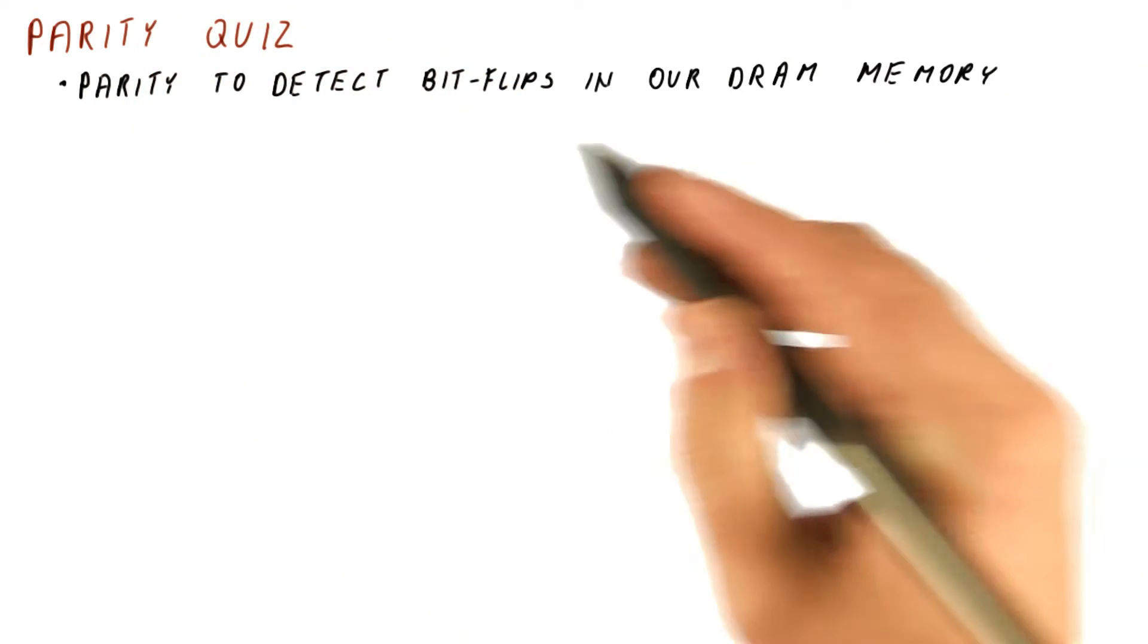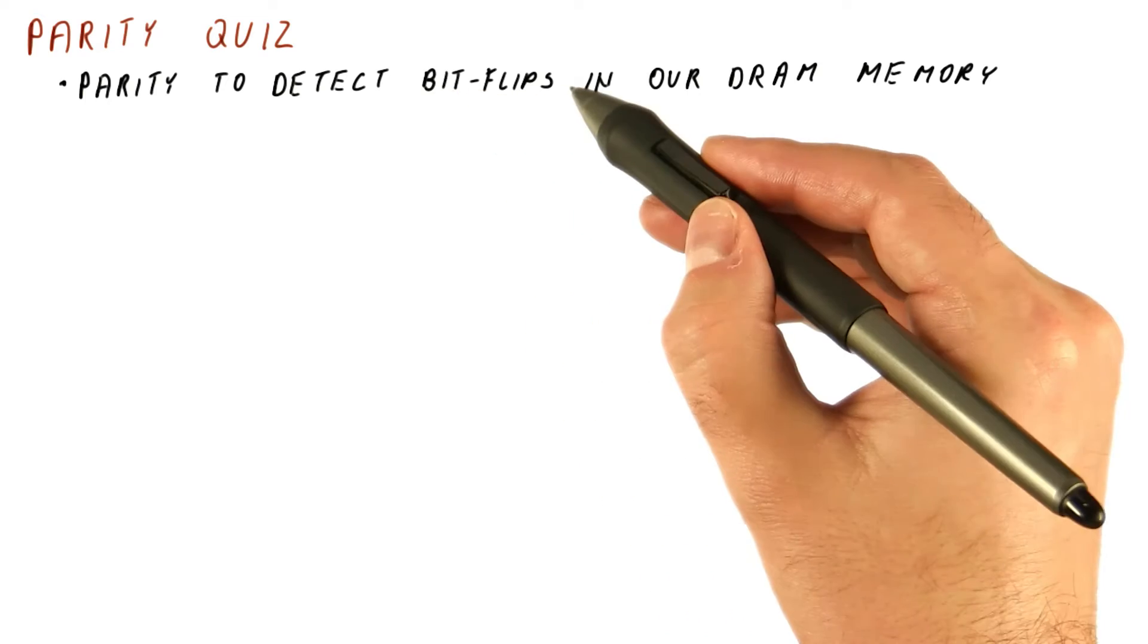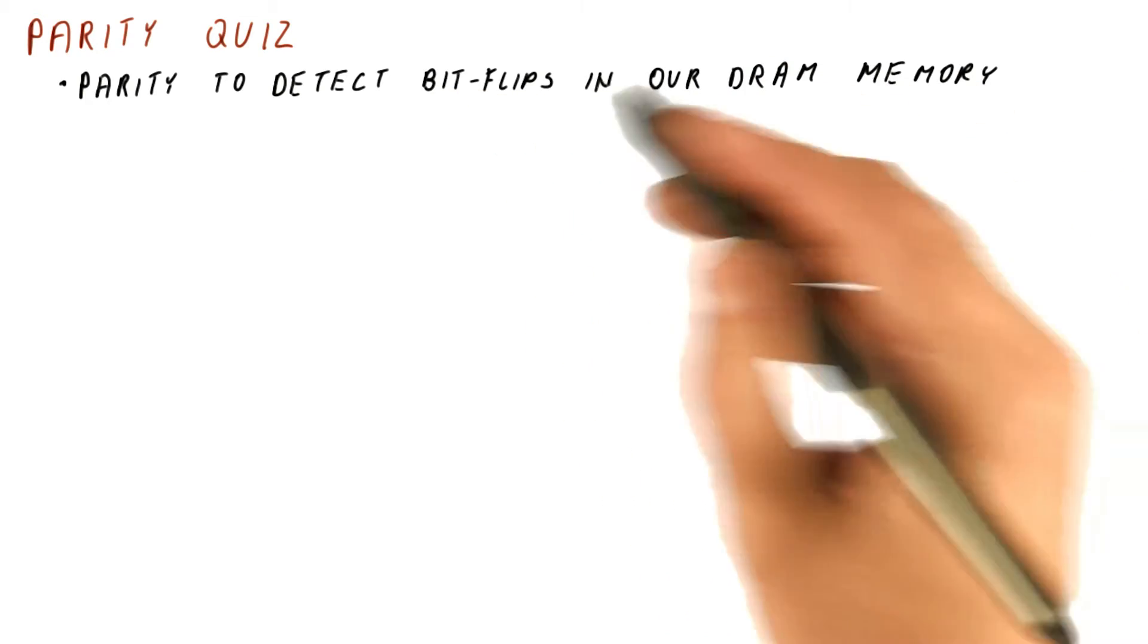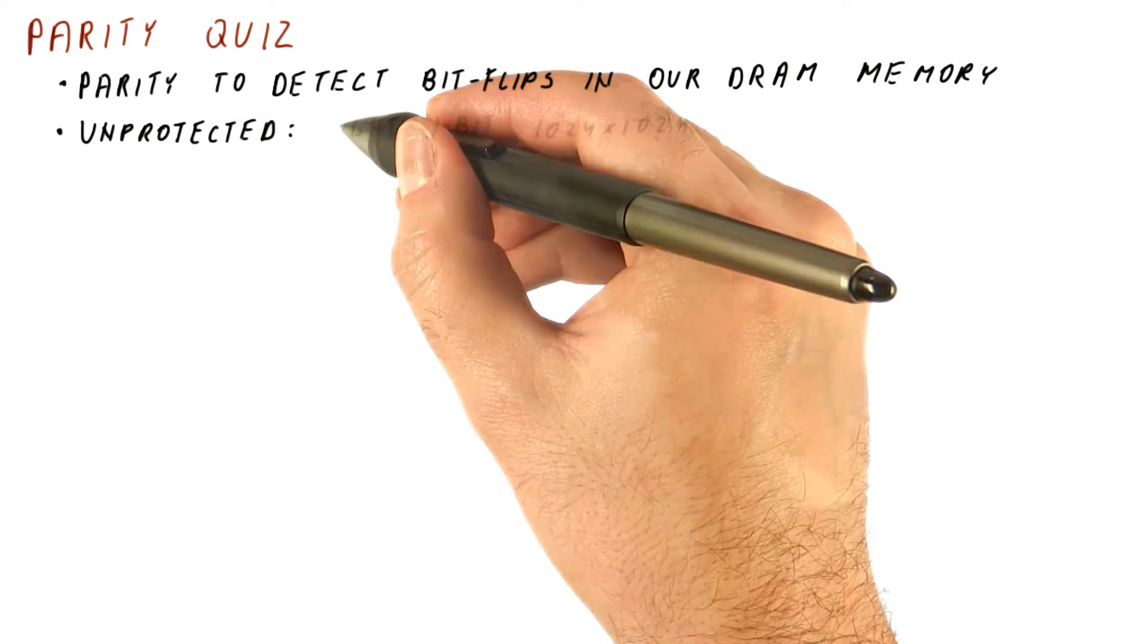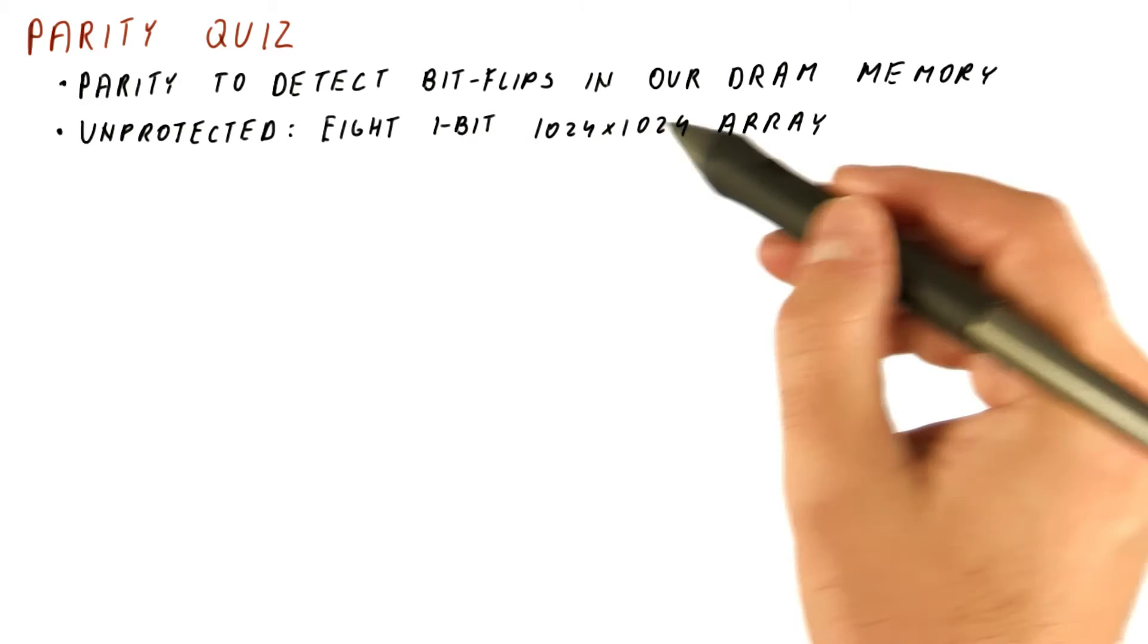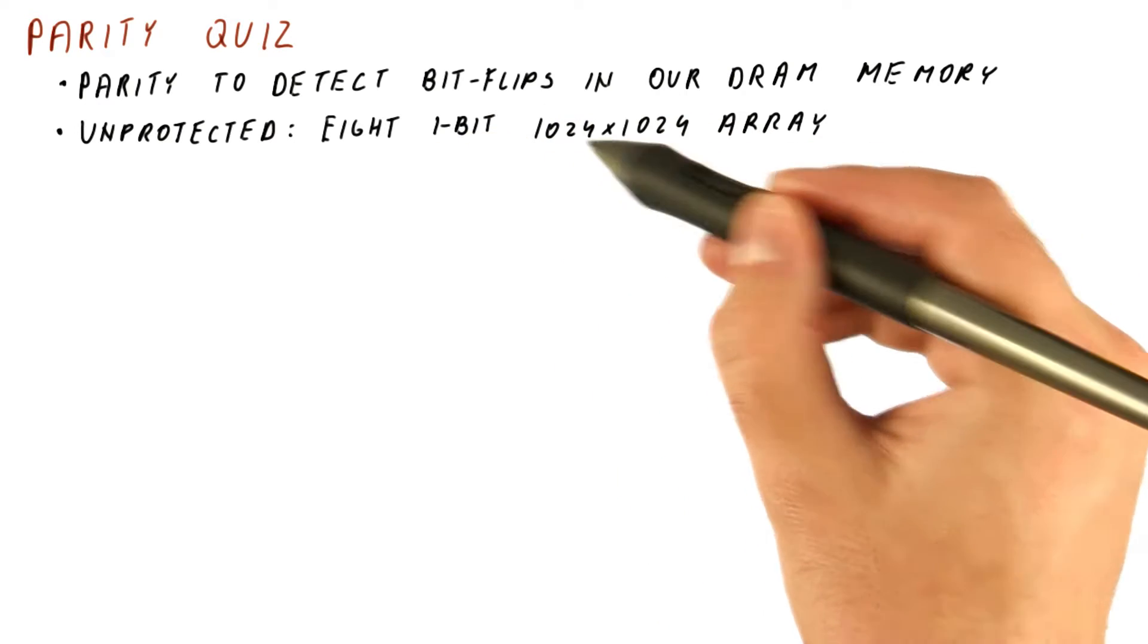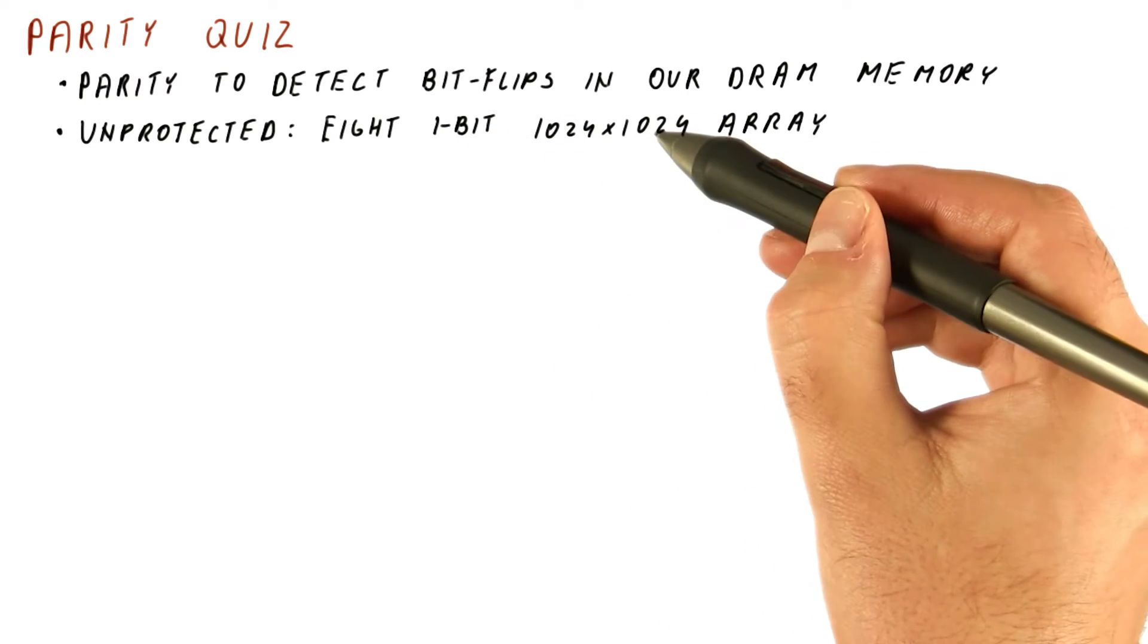Suppose we are using parity to detect bit flip errors in our DRAM memory. Our unprotected memory has eight one-bit arrays, each of which is 1024 by 1024 bits.